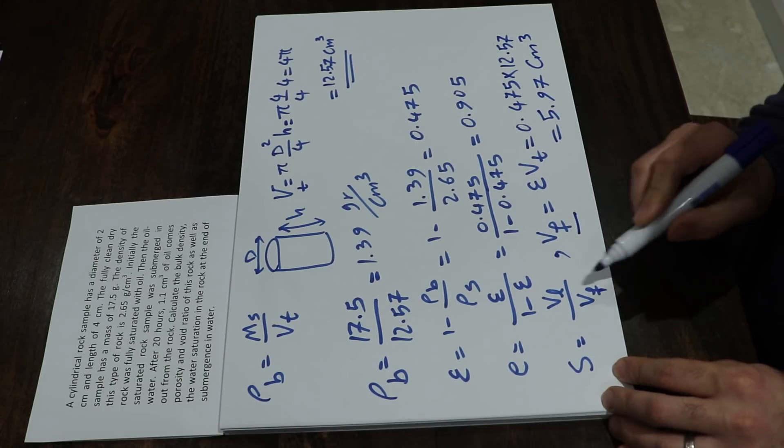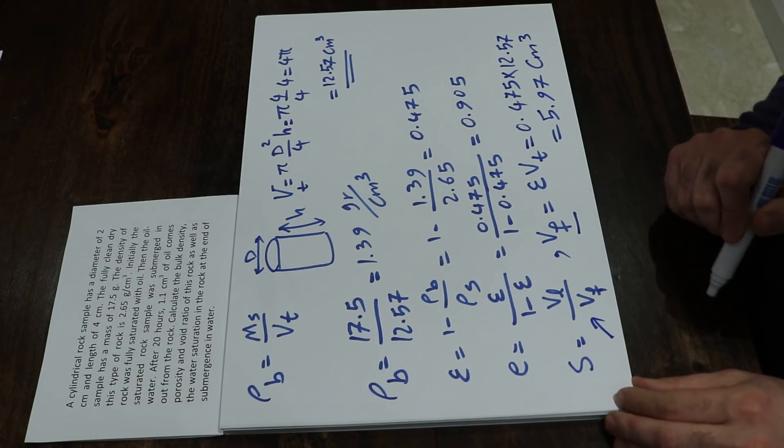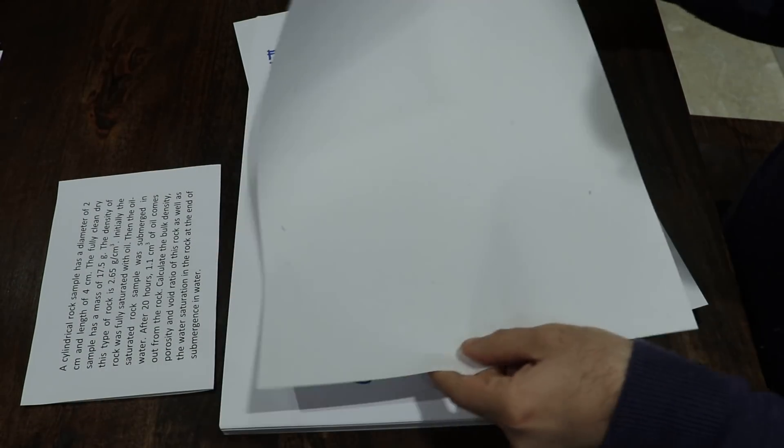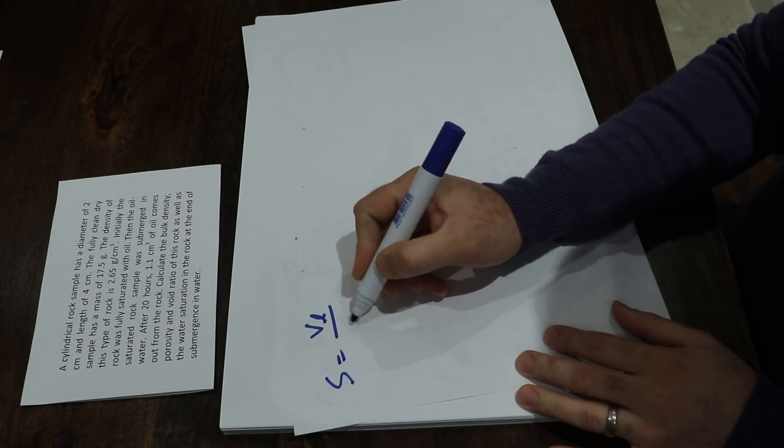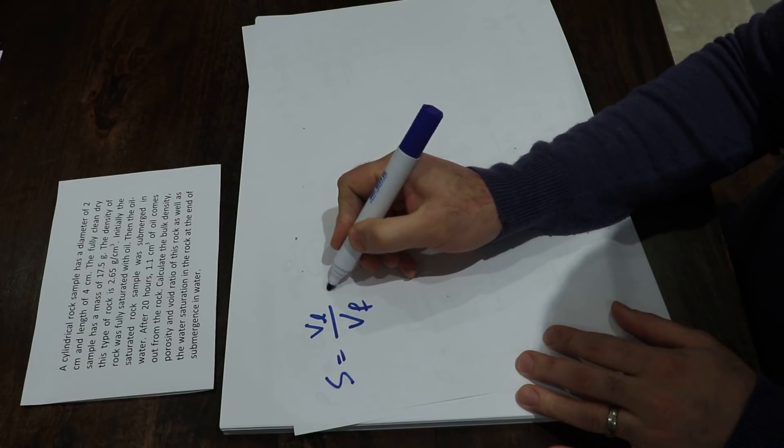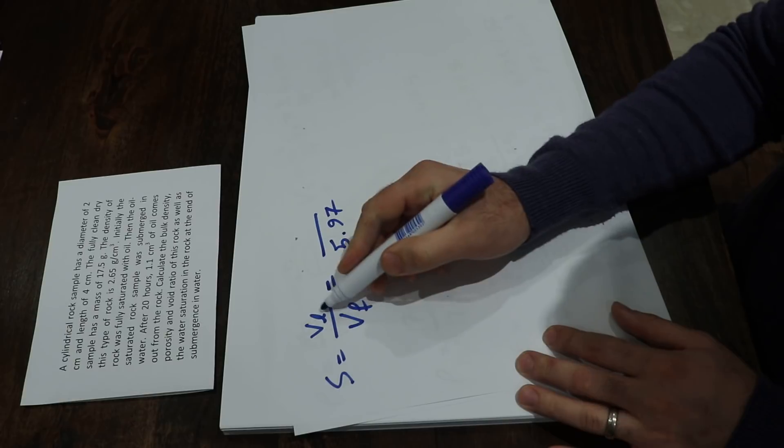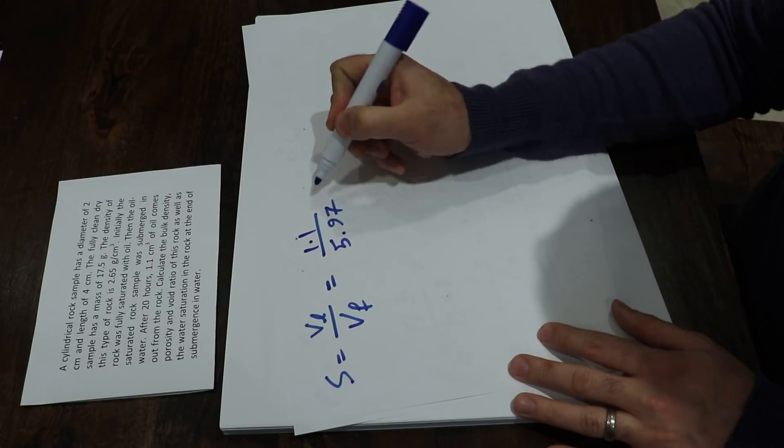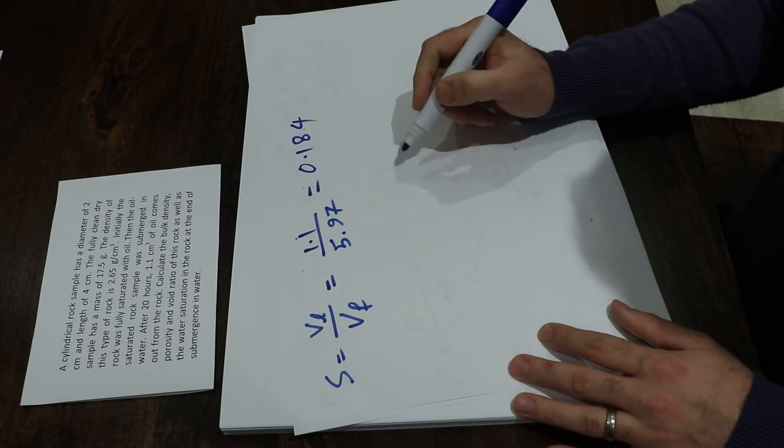So you have VF now. By plugging VF into the definition of the saturation, you can simply calculate the saturation. Saturation is equal to V liquid divided by VF. We already calculated VF, that is 5.97, and the liquid already given in the question, that is 1.1, that will be equal to 0.184. And that's the final answer.